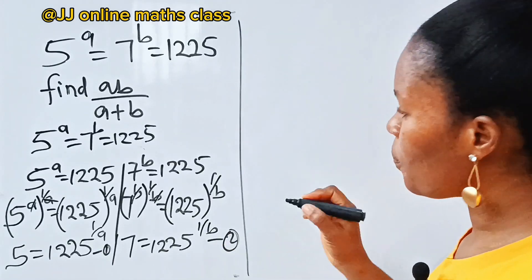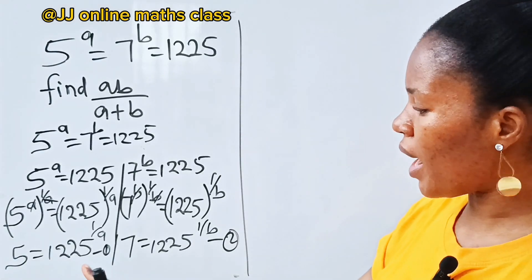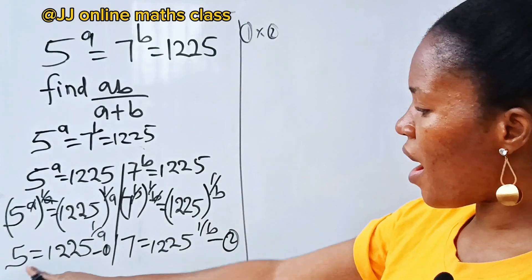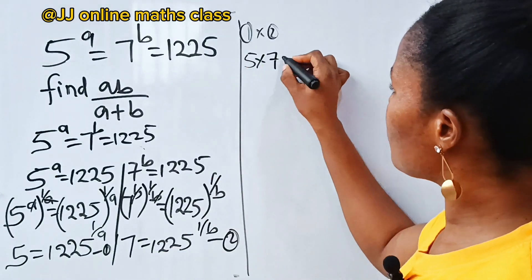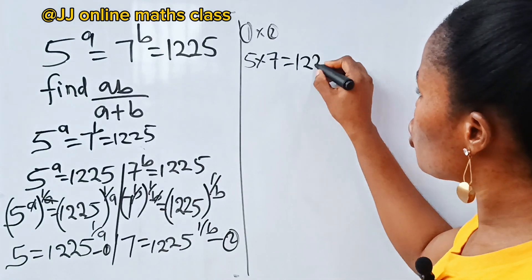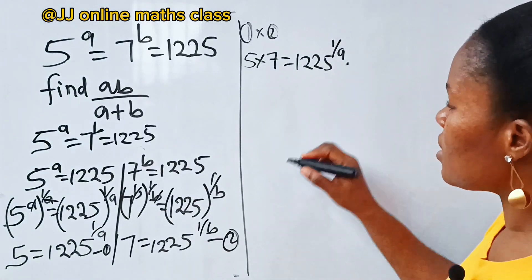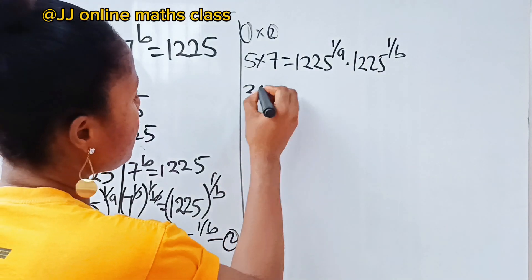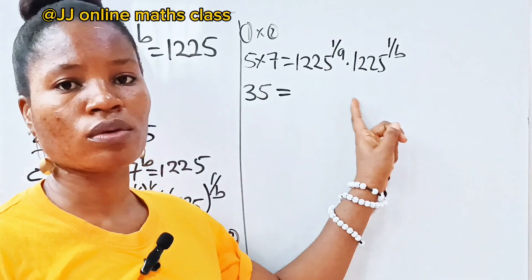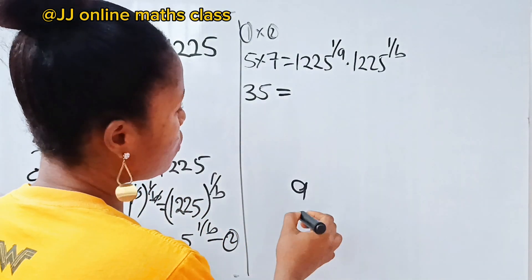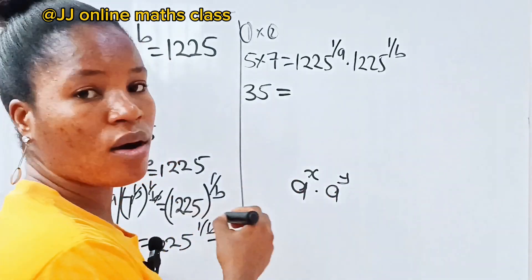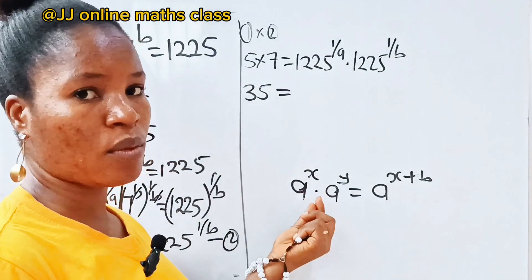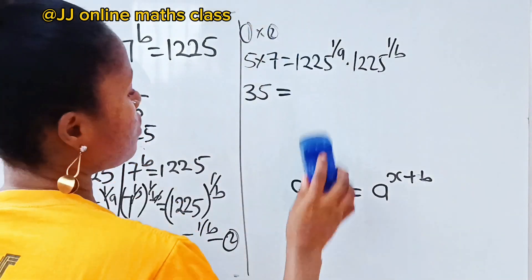Let's call the first result equation one and the second equation two. Now let's multiply equation one by equation two. Five times seven is equal to 1225 to the power of one over a times 1225 to the power of one over b. Five times seven is 35. Now let's recall the law of indices that states that a to the power of x times a to the power of y is equal to a to the power of x plus y.